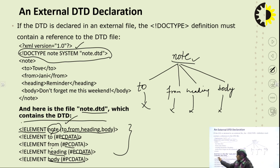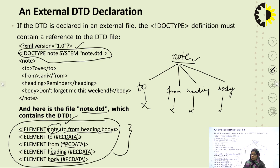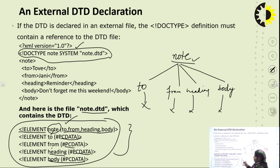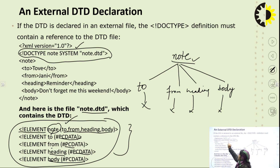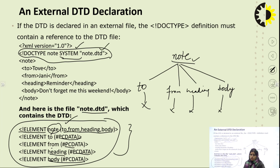This is the DTD code. Save it as 'node.dtd'. In the XML part, after writing the XML version, reference this DTD in the second line using the syntax: DOCTYPE node SYSTEM 'node.dtd'. The DOCTYPE keyword should always be written in capital letters, followed by the root node name and the DTD filename being referenced.